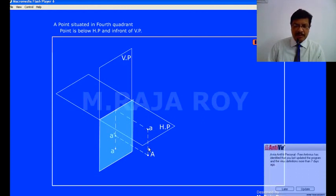When the point is in the 4th quadrant, you are getting the front VP below the XY lane as well as top VP also you are getting below the XY lane. That is the main drawback with the projections of points in the 4th quadrant.